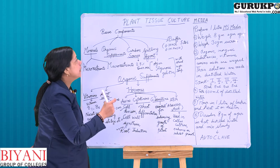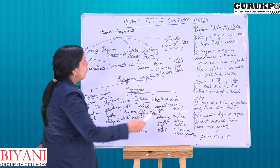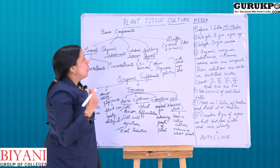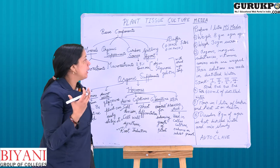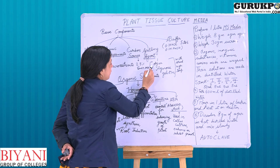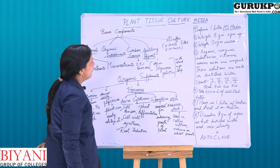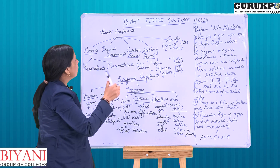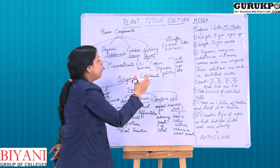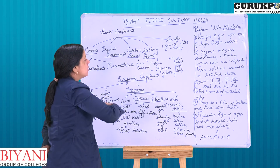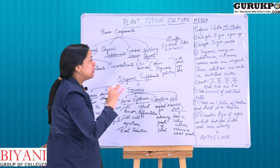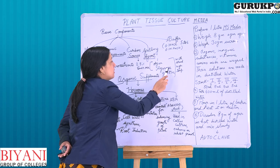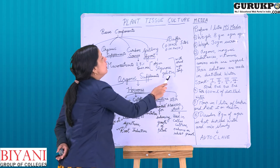Other than minerals and organic supplements, we use a gelling agent. Plant tissue culture is generally done on a semi-solid media, and to provide it a semi-solid consistency, we use agar, agarose, or gelatin. These are used as gelling agents because they can withstand high temperatures. After preparing the media, we must autoclave it at very high temperature to maintain sterile conditions, and all these gelling agents can withstand that autoclave temperature.